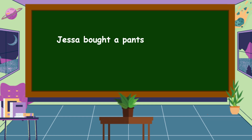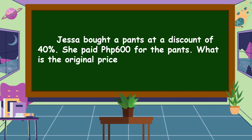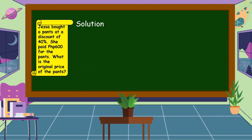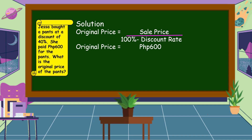Another problem: Jessa bought pants at a discount of 40%. She paid 600 pesos for the pants. What is the original price of the pants? The problem is asking for the original price. The formula is: original price = sell price ÷ (100% − discount rate). The sell price is 600 pesos and the discount rate is 40%.